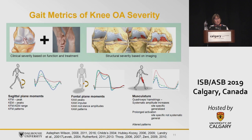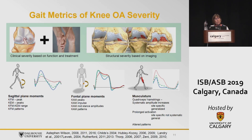Looking at how structural and functional changes impact biomechanical and muscle activation factors: clinical severity includes both structural changes and changes in symptoms. Clinical severity was defined based on function of the individual and whether their treatment was conservative or they were candidates for total joint arthroplasty. Structural severity is graded using the Kellgren-Lawrence scale from 0 to 4, depending on joint space narrowing and other changes observed on a radiograph. The focus is on the knee adduction moment, the knee flexion moment, and the quadriceps and hamstring musculature.